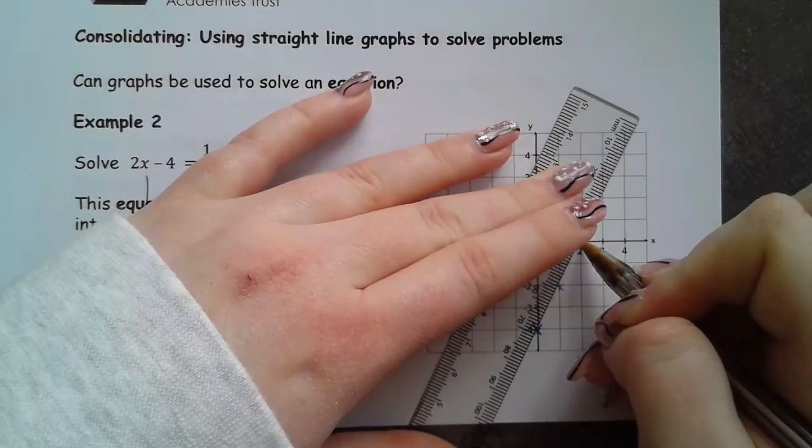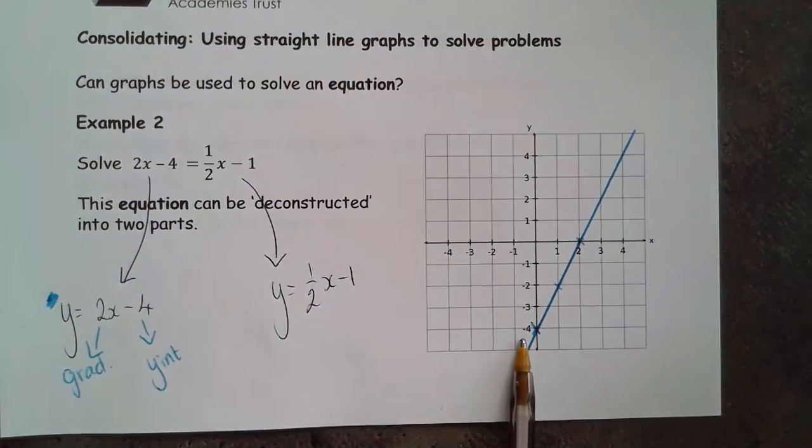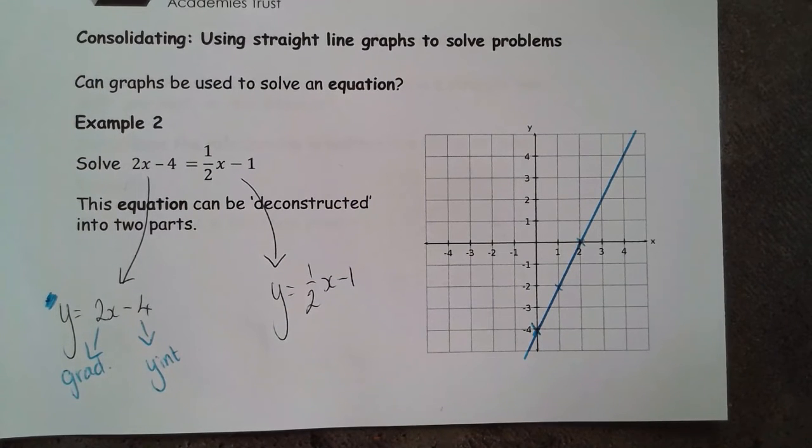So this is from the same family as the line we drew before, but it's been shifted down to cross at minus 4 instead of crossing at minus 3.